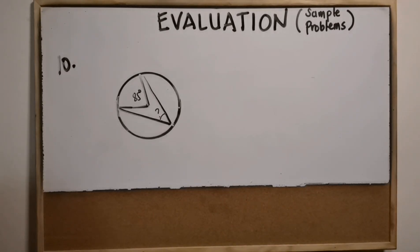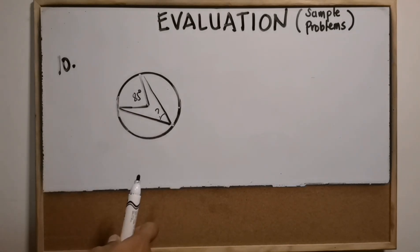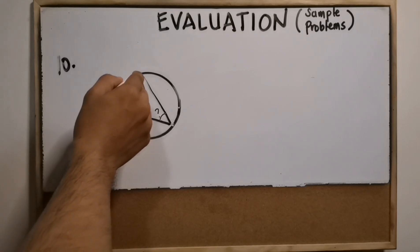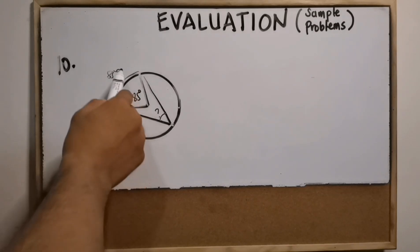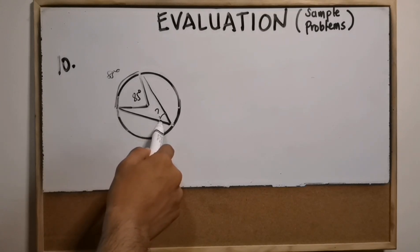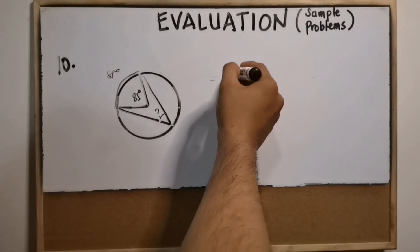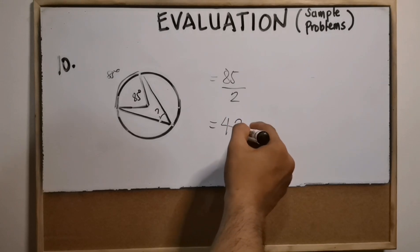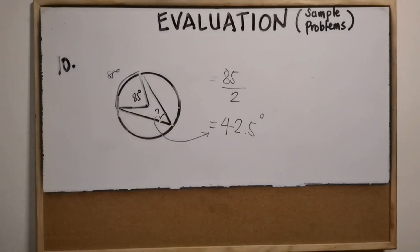Number ten: if the measure of the central angle is 85 degrees and you are looking for the measure of its inscribed angle, solve it this way. The intercepted arc equals the central angle, so the arc is 85 degrees. The inscribed angle equals one half of the intercepted arc: 85 over 2 equals 42.5 degrees. So the inscribed angle measures 42.5 degrees.